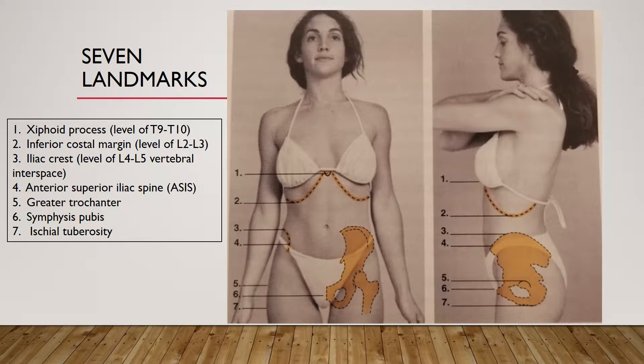Here are the seven landmarks of the abdomen. Number one is the xiphoid process, at the level of T9 to T10. Number two is the inferior costal margin, at the level of L2-L3. Three is the iliac crest, at the level of the L4-L5 interspace. Four is the anterior superior iliac spine or ASIS. Five is the greater trochanter. Six is the symphysis pubis. And seven is the ischial tuberosity.